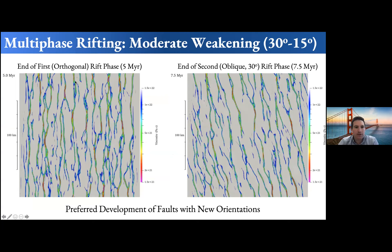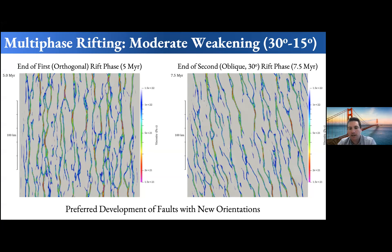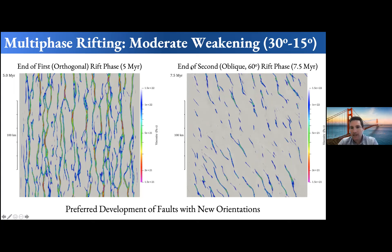With moderate strain weakening — friction angle going from 30 to 15 degrees — the end of the first orthogonal rift phase shows a classic pattern of distributed normal faulting with some fault linkage. Then switching to a 30-degree oblique phase, although some original faults remain active, you see a switch in fault orientation overall — preferred development of faults with new orientations. We are still in the process of quantitatively analyzing these models using image processing to determine the specific percentage of faults being reactivated versus new faults developing.